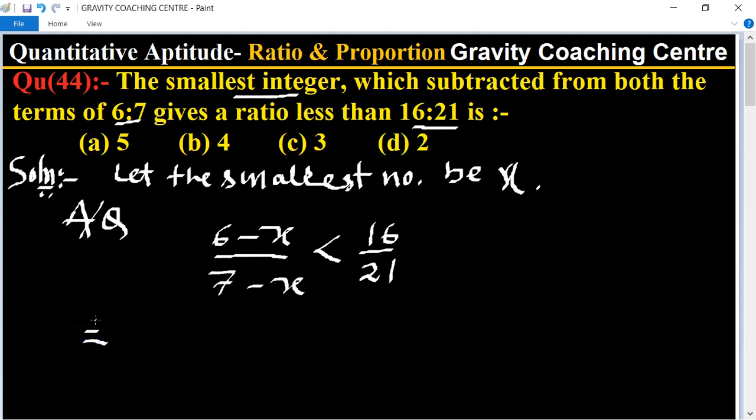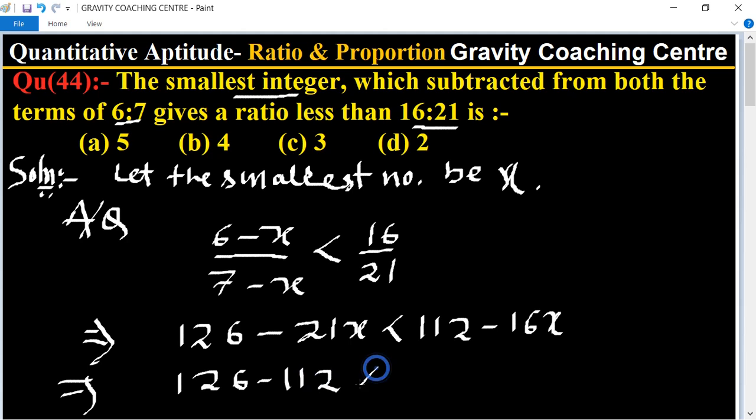Now implies that after cross multiplication, 6 into 21 equals 126 minus 21x, and this is less than 7 into 16 which is 112 minus 16x.